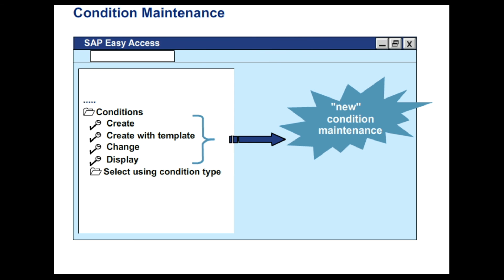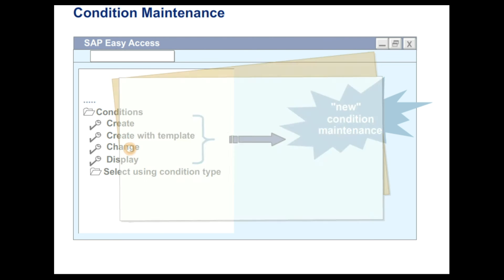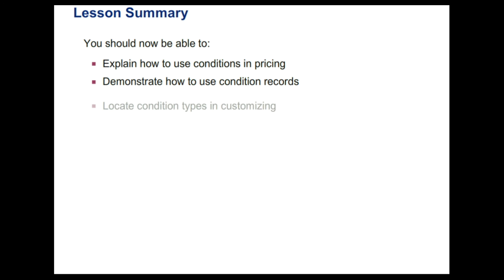Condition Maintenance: this slide explains how Condition Maintenance is done in the system. From SAP R3 Release 4.6A, an additional maintenance interface is provided for Condition Maintenance that allows mass maintenance of conditions based on certain criteria. You can continue to call up the previous maintenance transactions for Conditions by choosing Select using the Condition Type. Now that this lesson is over, you should be able to explain how to use Conditions in Pricing, demonstrate how to use Condition Records, and locate Condition Types in Customizing.